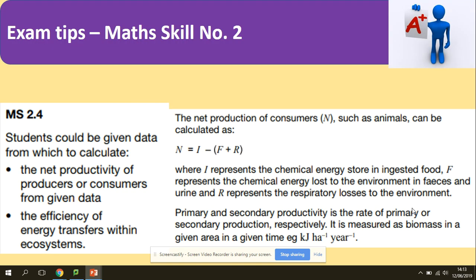Another skill quite similar is the net production of consumers, which stands for N. This can be measured by I, which is the chemical energy stored in ingested food, taking away F, which shows the chemical energy lost to the environment in faeces and urine, and taking away also R, which stands for the respiratory losses. What we need to remember is that any biomass that they will ask you to work out has specific units. Kilojoules stands for energy, hectares for the area, and year per time.